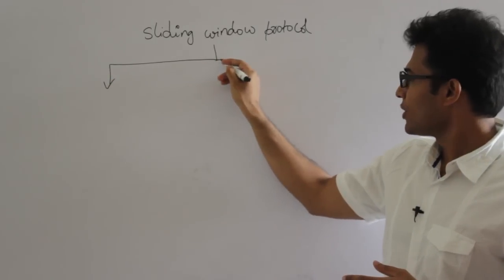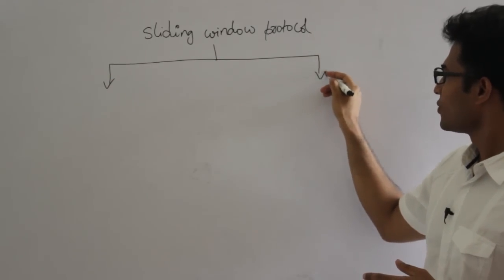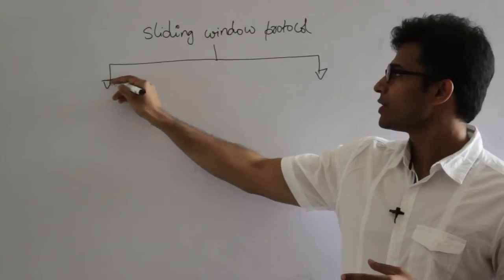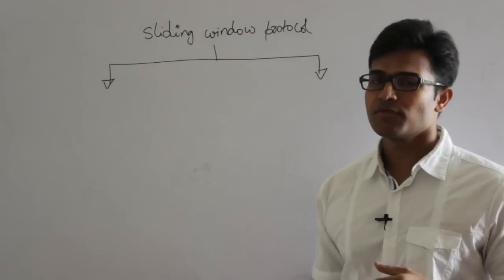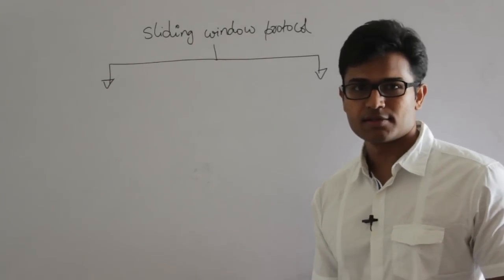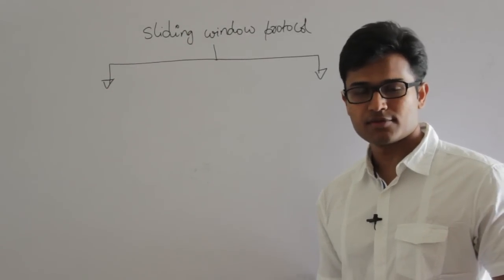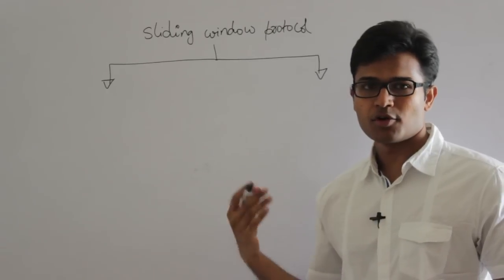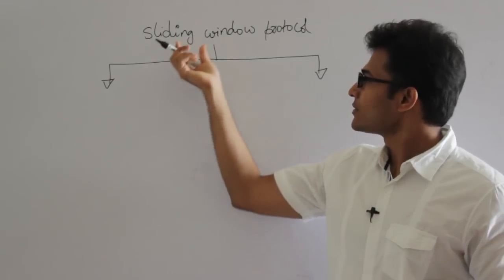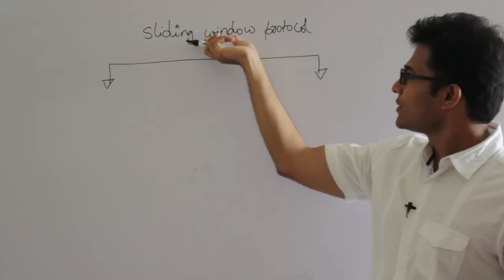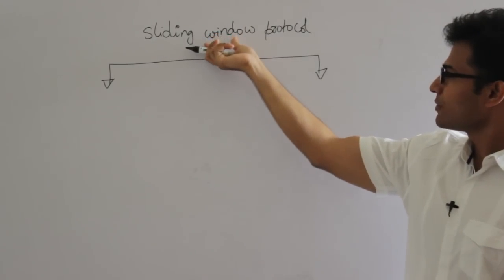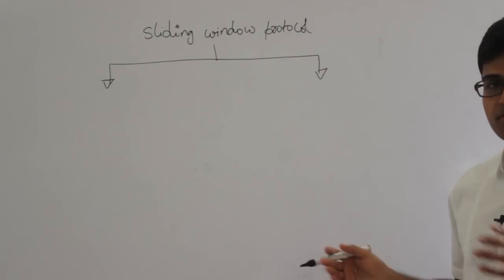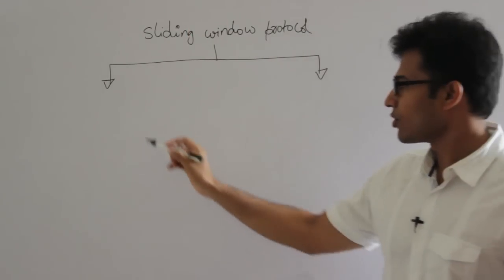Why go for sliding window protocol? To implement pipelining. Why pipelining? Because stop and wait efficiency is less. So because stop and wait efficiency is less, we go for sliding window protocol. Sliding window protocol is a theoretical concept and now we are practically implementing it in terms of two protocols.